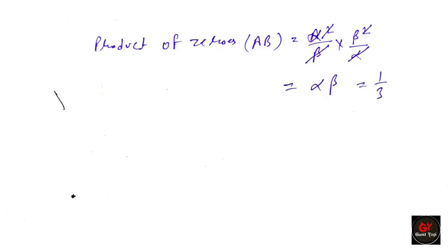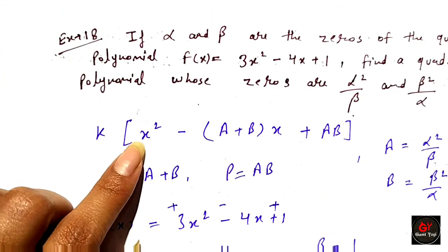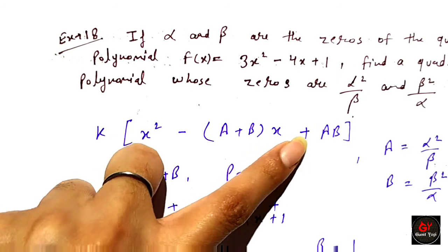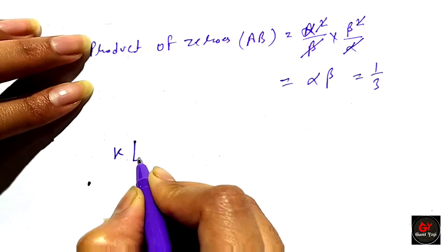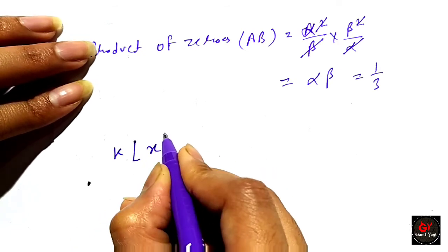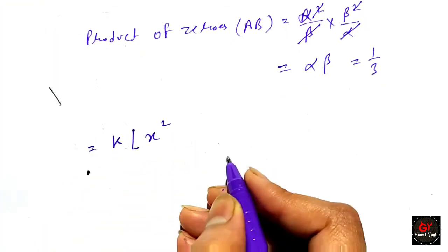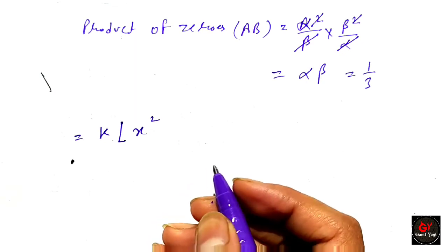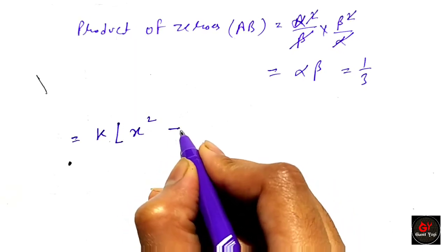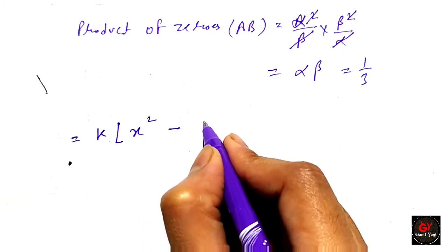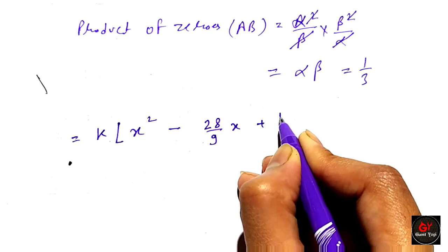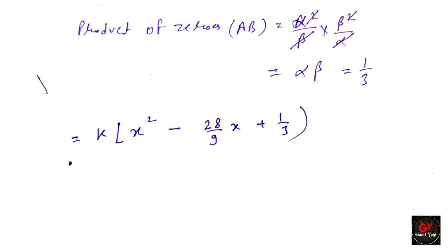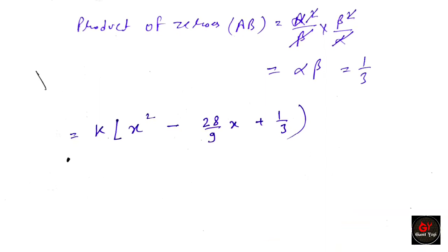We now write the required polynomial using the standard form: k times (x squared minus (sum of zeros) x plus product of zeros). Substituting, we get k times (x squared minus 28 over 9 times x plus 1 over 3), where k is any non-zero real number.